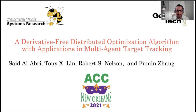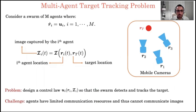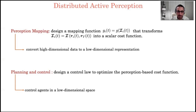Hello, I am Saeed Al-Abri, a postdoc at the Georgia Tech Systems Research Lab. Today I will talk about a derivative-free distributed optimization algorithm with applications in multi-agent target tracking, in collaboration with Tony Lins, Robert Nilsson, and Professor Fumin Zhang. We consider a swarm of agents where each agent captures an image of a target moving with unknown dynamics. The problem is to design a distributed control law so the swarm detects and tracks the target. A key challenge is that agents have limited communication resources and cannot share images. Our solution has two steps: designing a mapping function that transforms high-dimensional image information into a low-dimensional scalar cost function, and designing a control law to optimize this perception-based cost function.